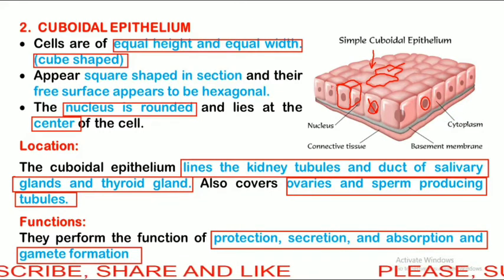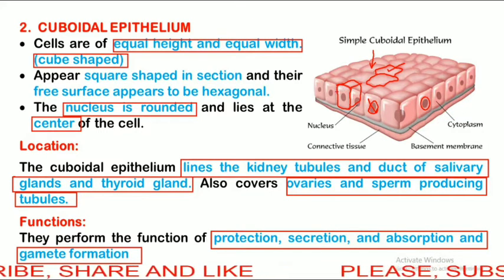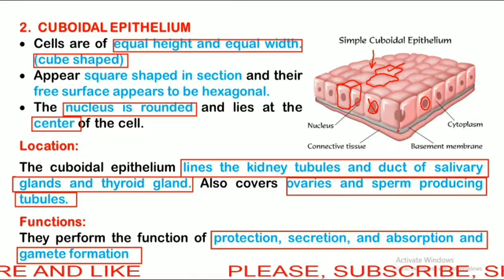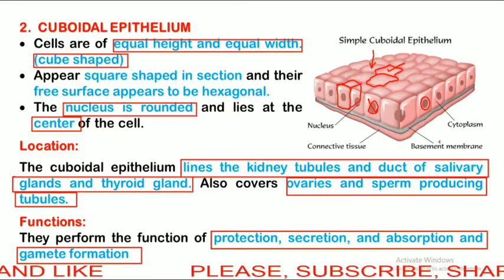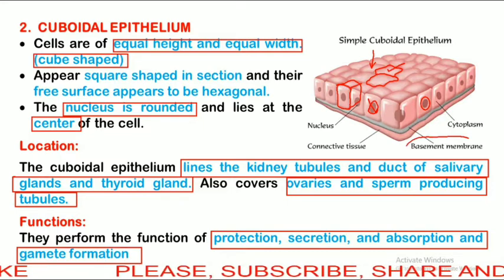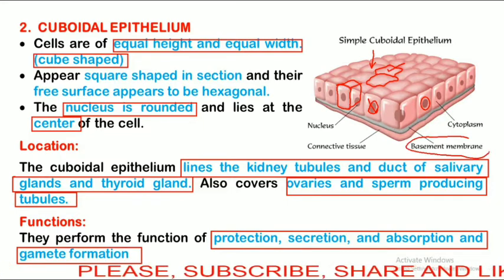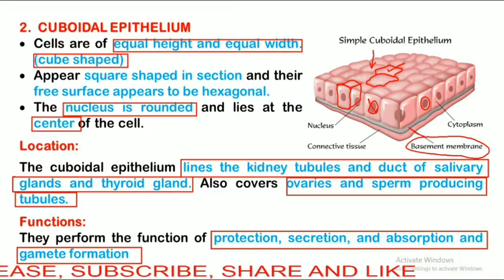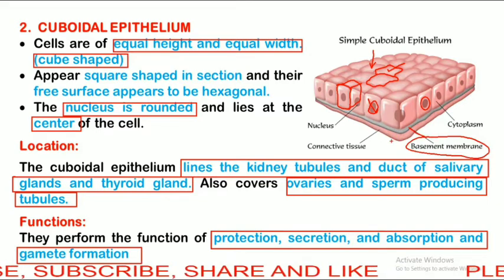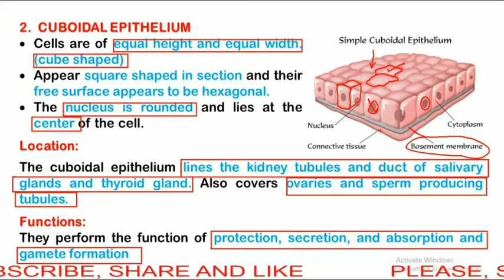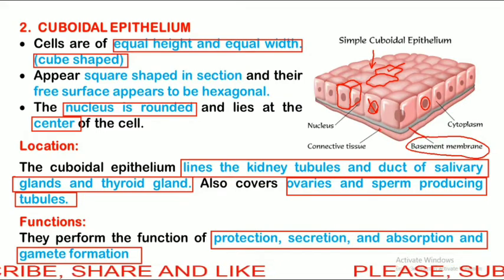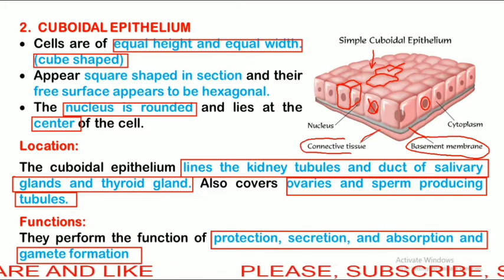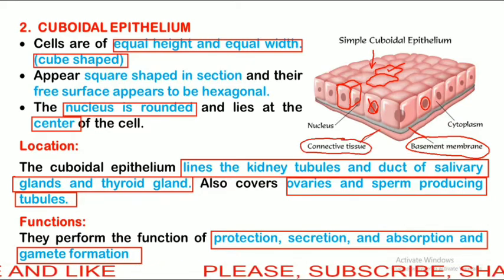The first layer is the cuboidal epithelium. Below this is the basement membrane, shown here in gray color. The lowermost layer is the connective tissue where blood vessels and nerves are present.